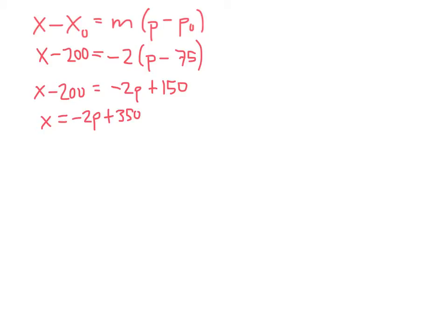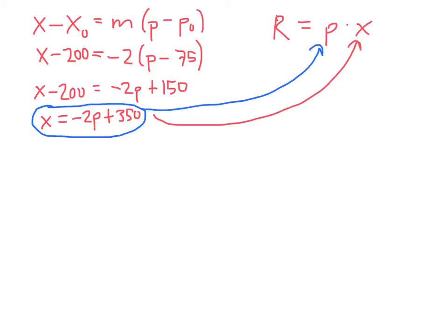Now remember, the reason why we wanted a demand equation is so that we could create a formula for our revenue. So revenue is price times quantity, P times X. And so initially, I might think what we would be able to do is just take this formula for X and substitute it in for the X there. But what that would do is give us a formula for revenue as a function of price. And the problem with that in this question is that we also have information about cost. And cost is always going to be a function of X, not a function of price. So we need to have revenue also be a function of X. And that means we need to solve this demand equation for P, so that when we substitute it in for P, we get a formula that just has X's in it.